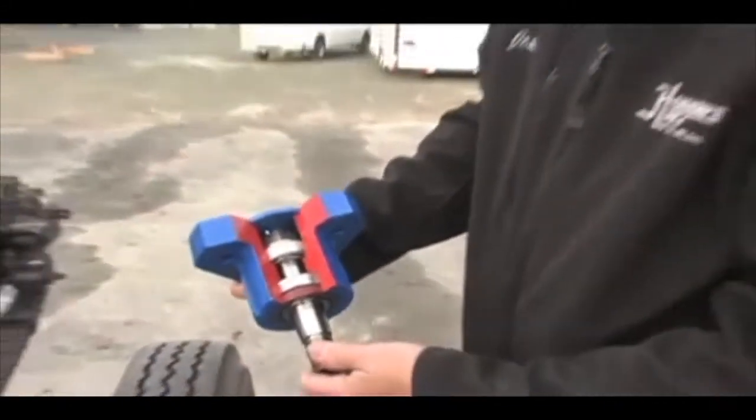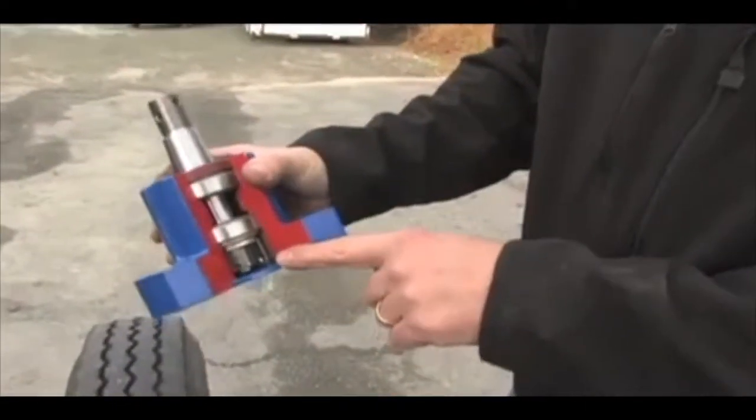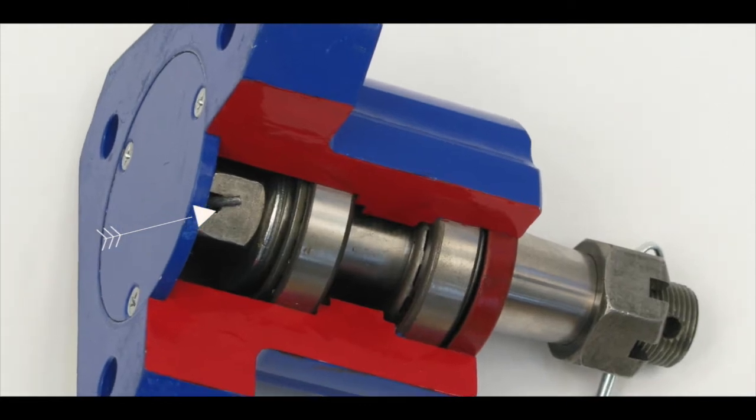If it ever does get any wear, it's just a matter of removing the bell crank from the frame, pulling this cap off, and we've got a nut and cotter pin there. You can adjust it just like you would a wheel bearing on a car.